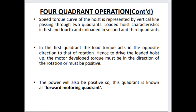Here see the four-quadrant operation in detail. The speed-torque curve of the hoist is represented by a vertical line passing through two quadrants. Loaded hoist characteristics are in the first and fourth quadrants, and unloaded in the second and third quadrants. This is an important MCQ question — when asked about loaded characteristics, the answer is first and fourth quadrant; when asked about unloaded characteristics, the answer is second and third quadrant. In the first quadrant, the load torque acts in the opposite direction to that of rotation. Hence to drive the loaded hoist up, the motor-developed torque must be in the direction of rotation and must be positive. The power will also be positive. So the first quadrant is known as the forward motoring quadrant.